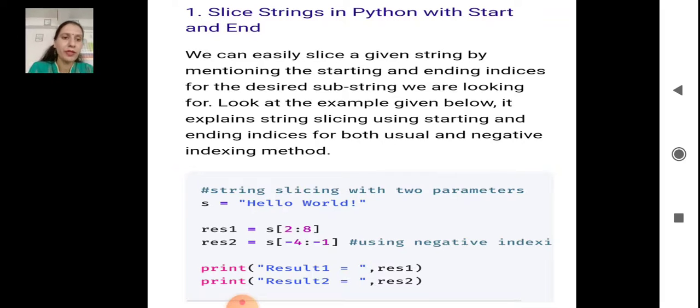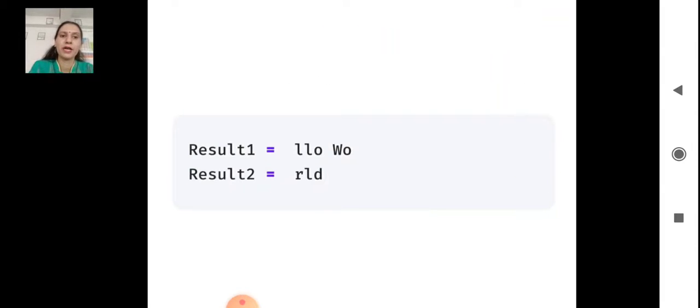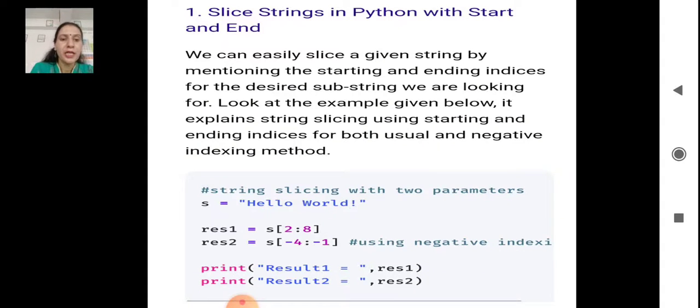When we run this code we get the output result1 equals to 'llo Wo'. See here we are slicing the substring from index 2. The start value is 2, H is at 0 index, E at 1 index, and L at 2 index.